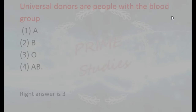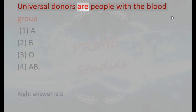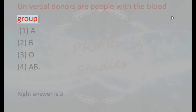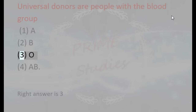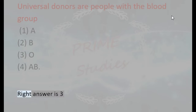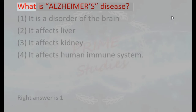Universal donors are people with the blood group: 1. A, 2. B, 3. O, 4. AB. Right answer is 3.